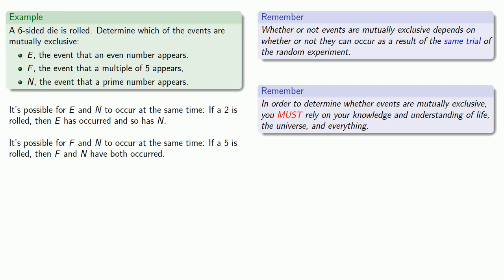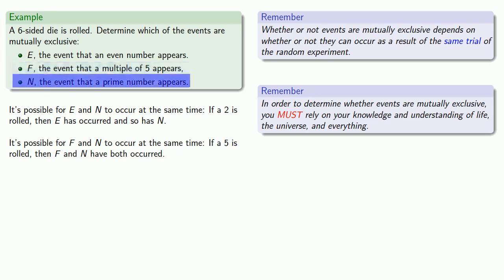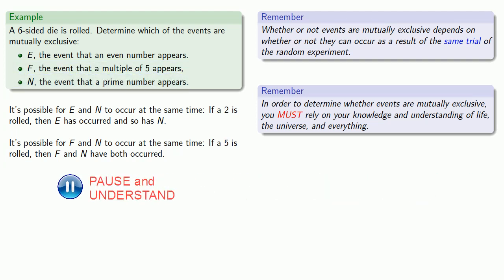It's also possible for F and N to occur at the same time. If a five is rolled, then F, a multiple of five, has appeared, and N, a prime number, has also appeared. So both F and N have occurred. Because they can occur simultaneously, they are not mutually exclusive.